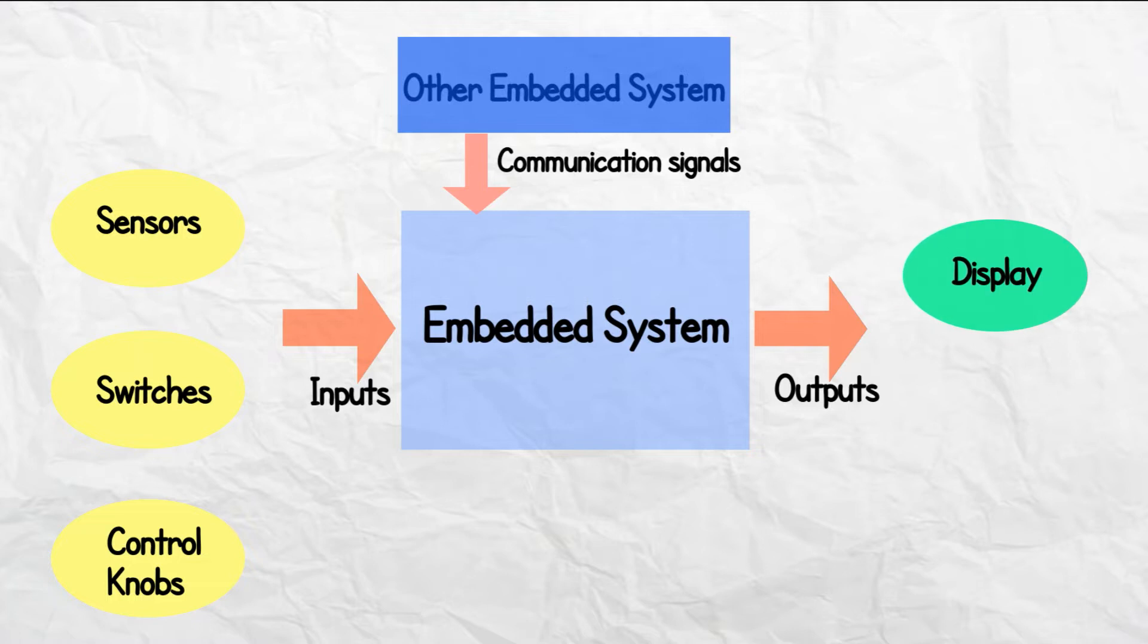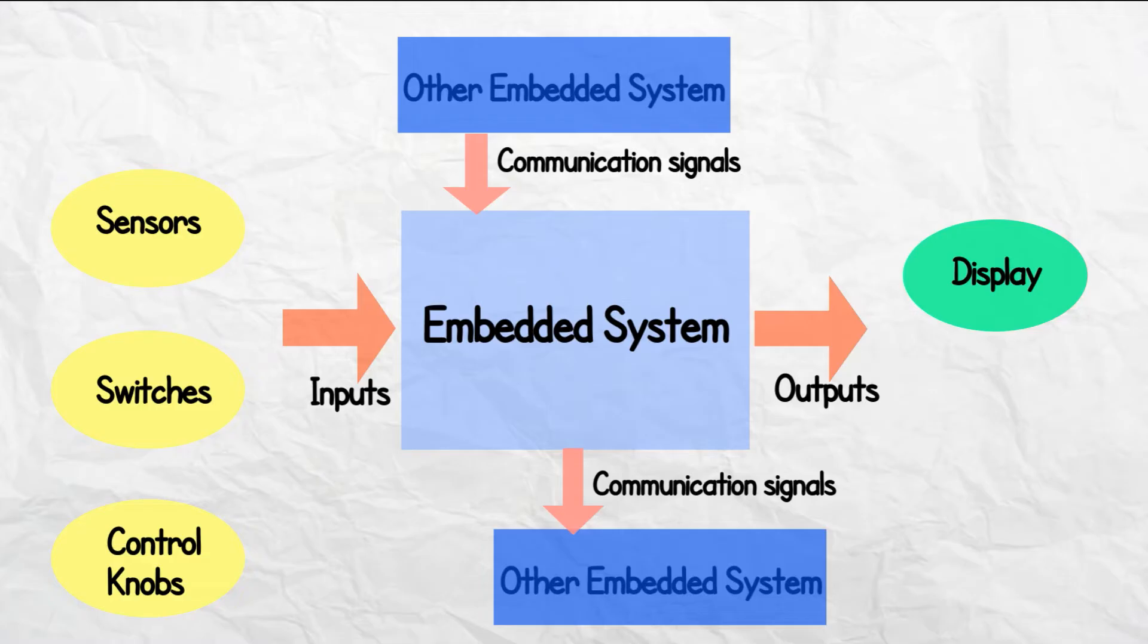Outputs can be displays, communication signals to other embedded systems and controllers, and actuators or motors like torque motors, servo motors, stepper motors, and many more.